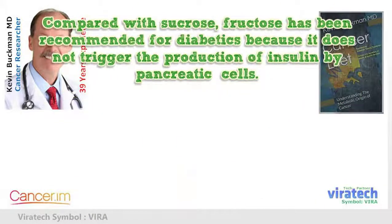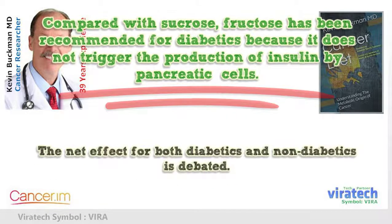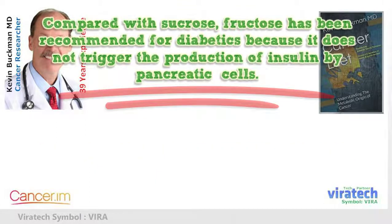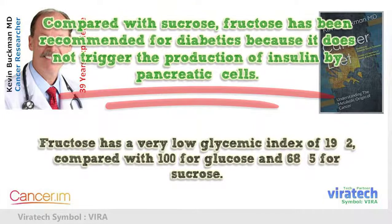Compared with sucrose, fructose has been recommended for diabetics because it does not trigger the production of insulin by pancreatic cells, though the net effect for both diabetics and non-diabetics is debated. Fructose has a very low glycemic index of 19, compared with 100 for glucose and 68.5 for sucrose.